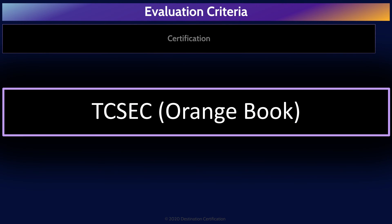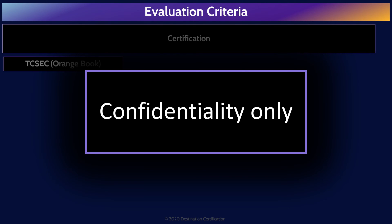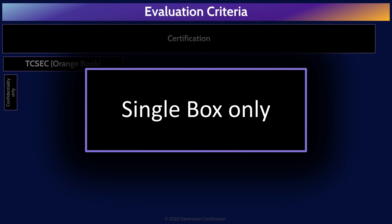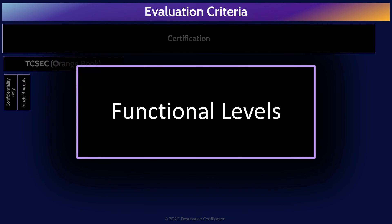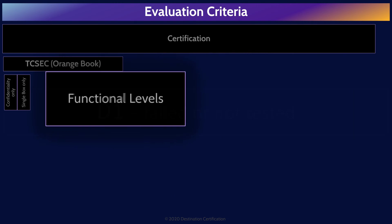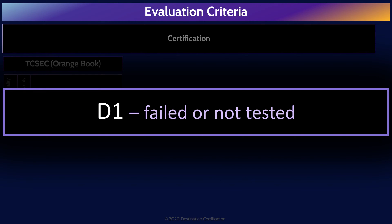Let's look at the different evaluation criteria systems that have been developed, starting with one of the oldest: TCSEC, the Trusted Computing System Evaluation Criteria, otherwise known as the Orange Book — because the cover of the TCSEC was orange. TCSEC was only designed to evaluate the confidentiality that a system provides, and only for products that are not connected to a network — single standalone boxes only. TCSEC defines seven functional levels. The lowest is D1, which means the product failed or wasn't tested — not a reassuring rating.